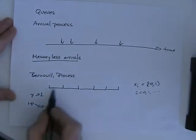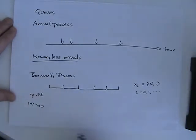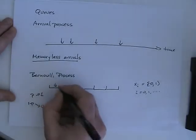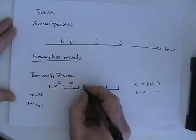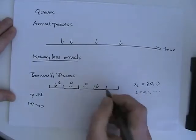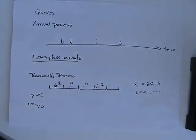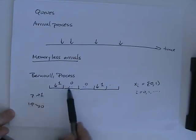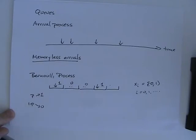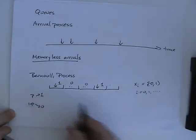For instance, we could flip a coin and decide whether there's an arrival in each slot — the first slot has an arrival, the second no arrival, the third no arrival, the fourth an arrival, and so on. If we flip a fair coin, the chance of an arrival in any slot is exactly p, regardless of anything that happened in the past. The mean number of arrivals per slot is p.